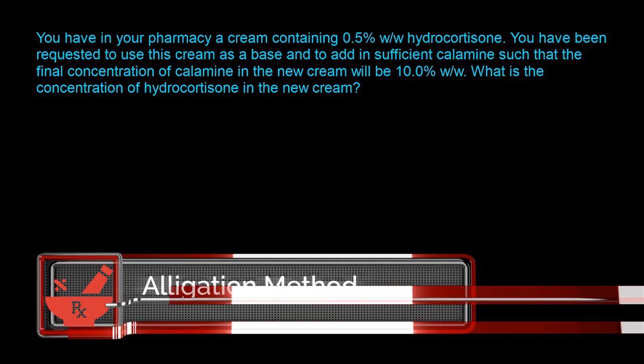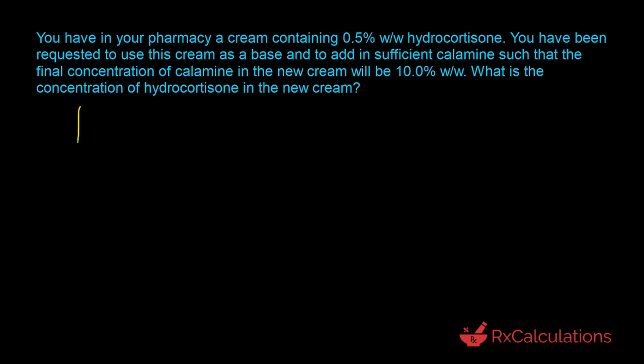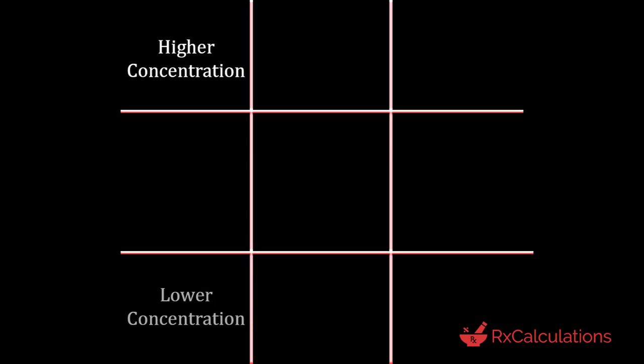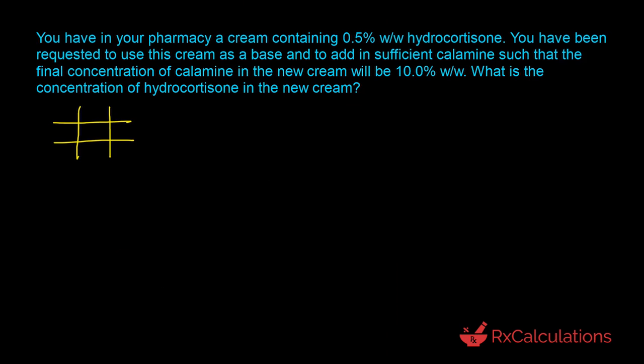Now let's look at how you can use the allegation method to solve the same question. With the allegation method, you start off with your grid — construct two vertical lines and two horizontal lines. The higher concentration goes to the top left, the lower concentration goes to the bottom left, and your desired concentration is in the middle. If you need a more comprehensive tutorial on the allegation method, I'll put a link to a playlist in the description and in the cards.